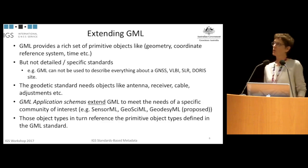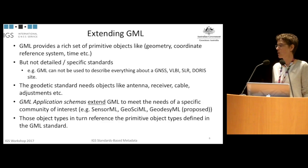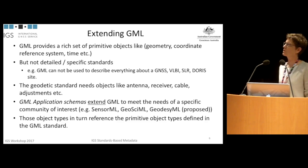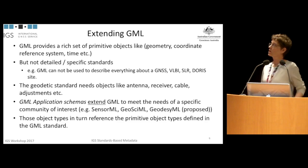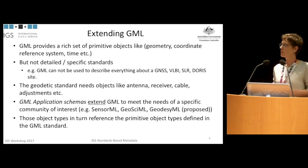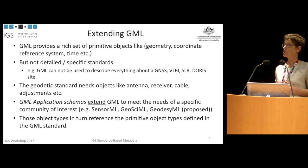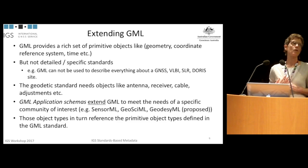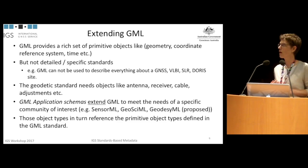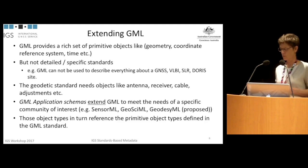What we need to do in the geodetic community is extend GML. It has primitive objects for geometry, coordinate reference systems, and time, but it doesn't have the details needed in Geodesy for our techniques — GNSS, VLBI, etc. — or the specifics of the equipment we use. What is needed is what's called an application schema that extends GML. Extensions like SensorML and GeoSciML already exist, and GeodesyML is one of these extensions.